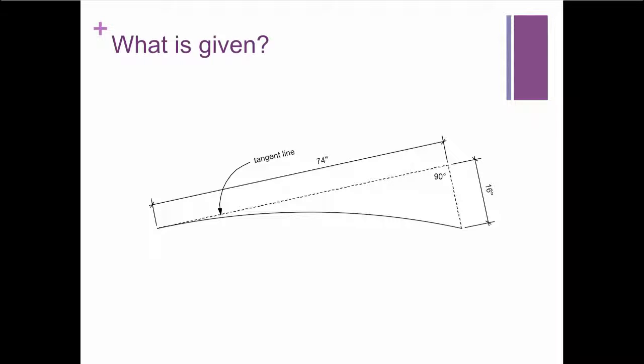This is what he had. The plans gave him this information. They said, draw a tangent line 74 inches, and drop a leg down 90 degrees that is 16 inches long. And at the end of that 16 inch long piece and at the left end of your tangent line, that's where your arc will span. So the arc will span between those two points. So he said, why didn't they give me the radius?